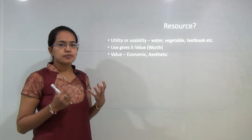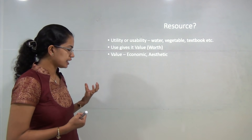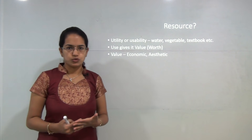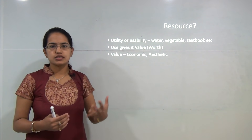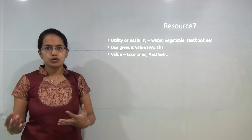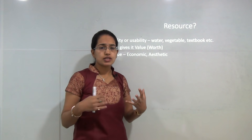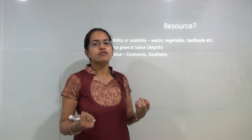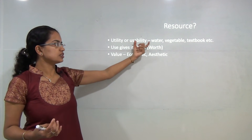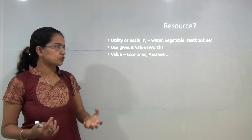Now when we try to understand the basic question — what are resources and why are they important — anything which is of use for us is a resource. For example, water is a resource because we use water. Similarly, textbooks, books, paper, vegetables, fruits, trees — all these are resources because we use them in our daily life in one way or the other. Based on the utility or the usability of something, we classify them as resources.